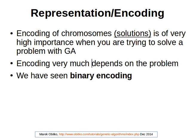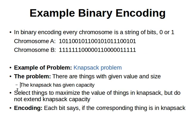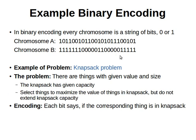We've seen binary encoding — it's just a string of bits, zeros and ones. So that's an example chromosome, and that's another example chromosome. One well-known problem that can be solved using binary encoding is the knapsack problem. There we have a number of objects, each of which has a value and a size, and a knapsack — a bag or box — that has a certain capacity.